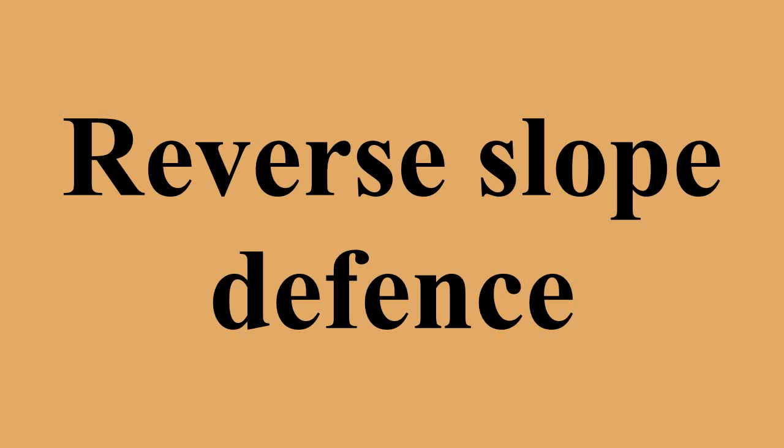American Civil War: Examples of reverse slope defense during the American Civil War included Stonewall Jackson's defense of Henry House Hill during the First Battle of Manassas, where he ordered his soldiers to lie down below the crest of the hill in order to avoid Union artillery, and Winfield Scott Hancock's counter-attack against Jubal Early at the Battle of Williamsburg.